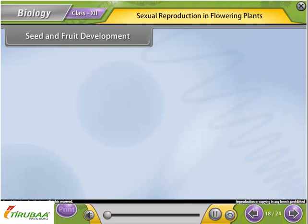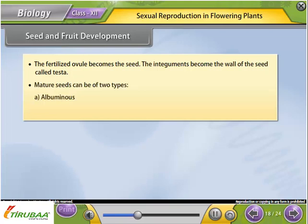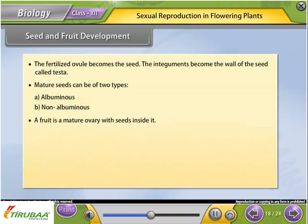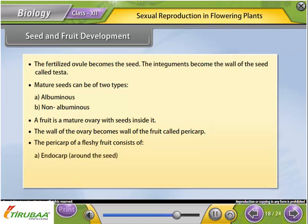Seed and fruit development: The fertilized ovule becomes the seed; the integuments become the seed coat called the testa. Mature seeds can be albuminous or non-albuminous. A fruit is a mature ovary with seeds inside it; the wall of the ovary becomes the wall of the fruit called the pericarp. The pericarp of a fleshy fruit consists of endocarp (around the seed), mesocarp (fleshy portion), and exocarp (the skin).